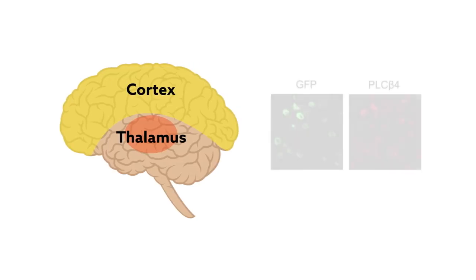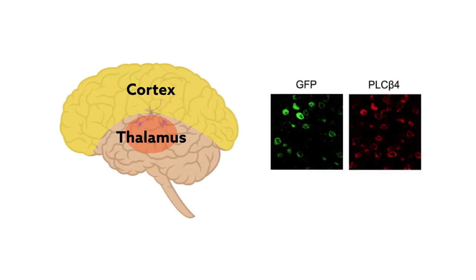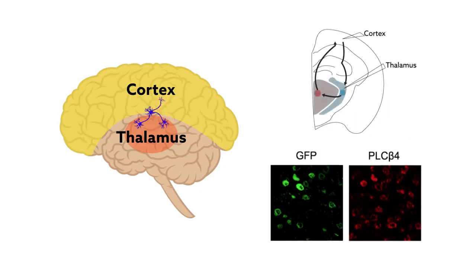Here, the research team studied one of the ways that the cortex and thalamus communicate, through a specific pair of proteins, the type 1 metabotropic glutamate receptor and the PLC-beta-4 enzyme. The metabotropic glutamate receptor in the thalamus received the cortical input.